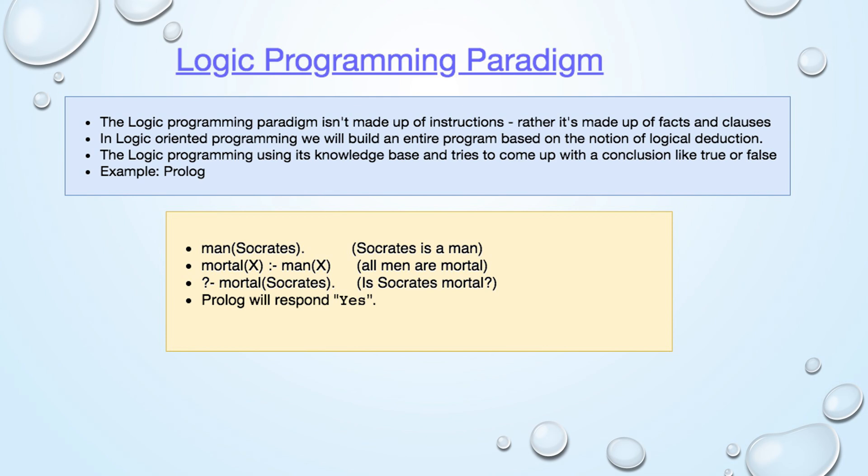Example: Prolog language. In this example, we tell the computer: Socrates is a man, and we say all men are mortal. Then we ask the computer: is Socrates mortal? The computer will then use its knowledge to reply: yes.